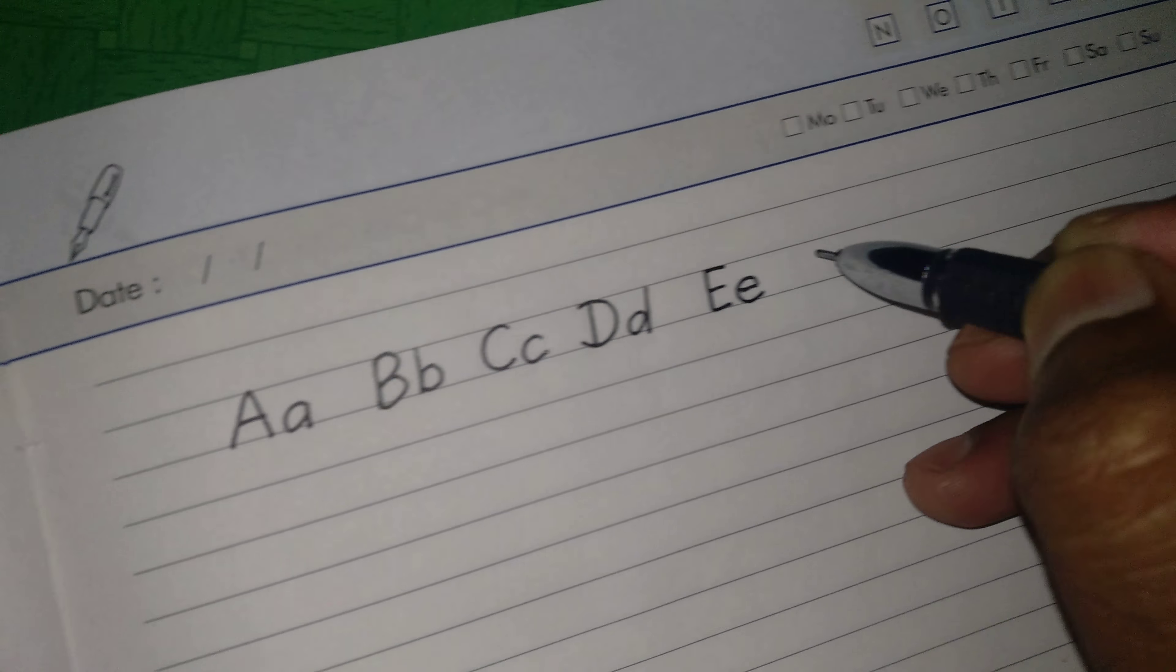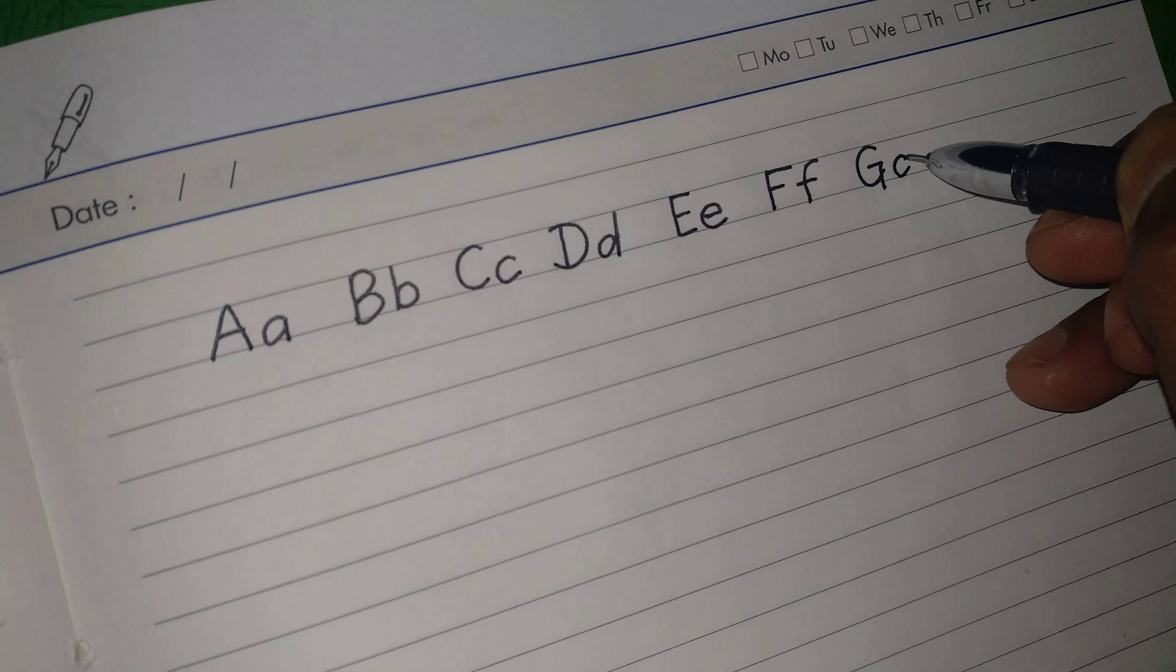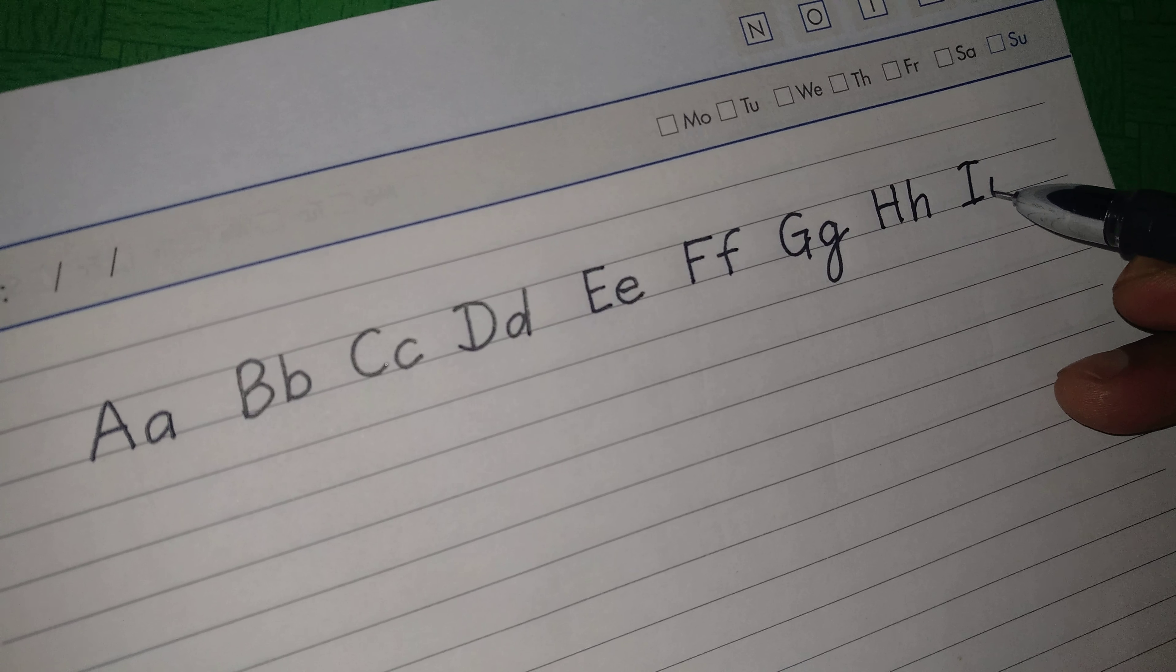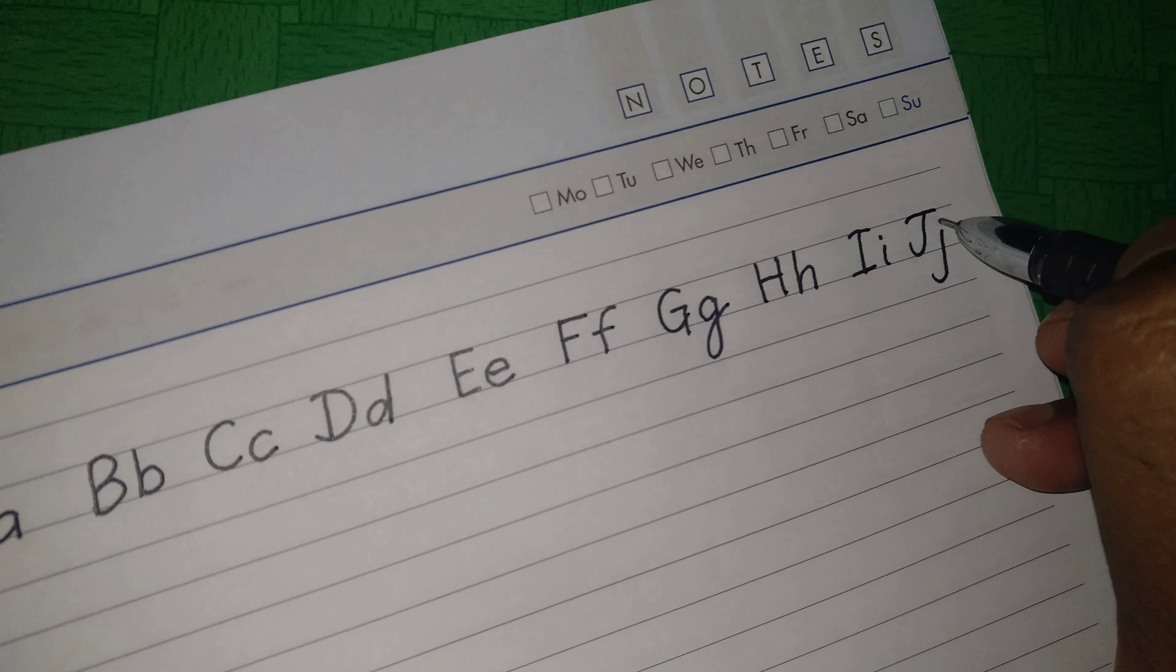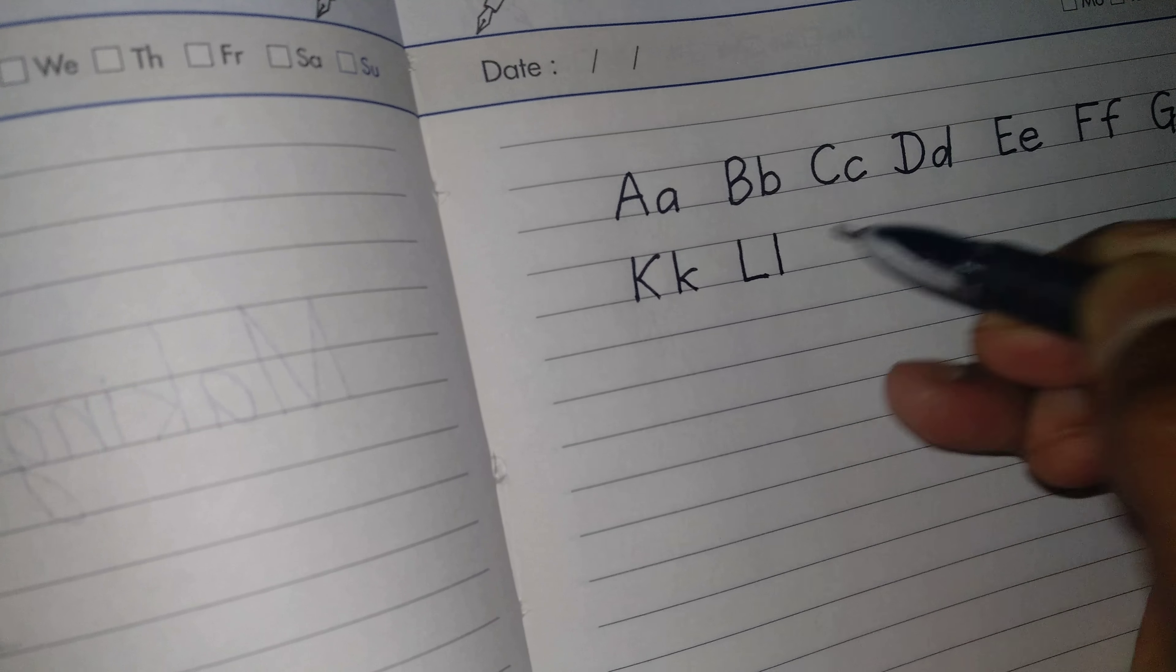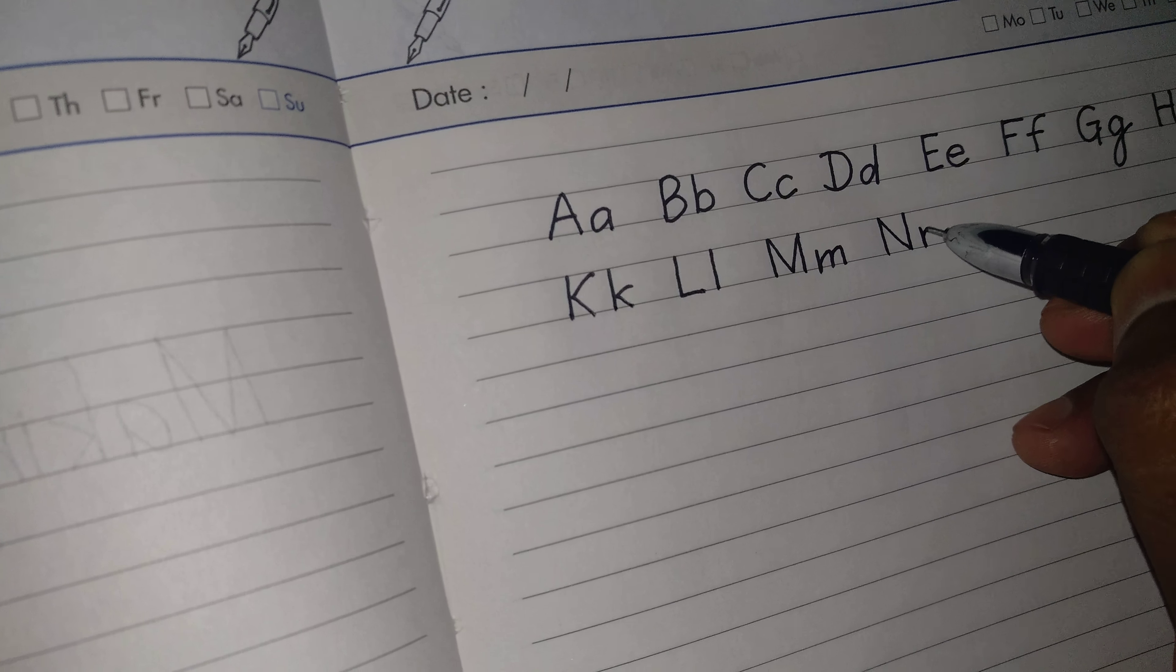This is F and this is small one, and this is G and you make G small G. And H and this is small one, and this is I and small I. This is J and this one is small J, and K small K, L small L, M and this is small one, and this is small one.